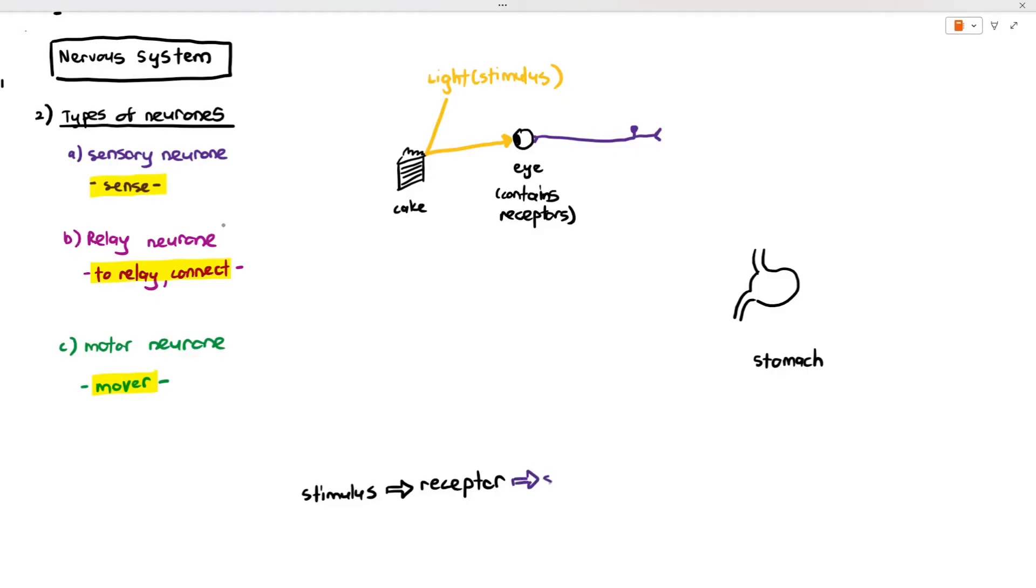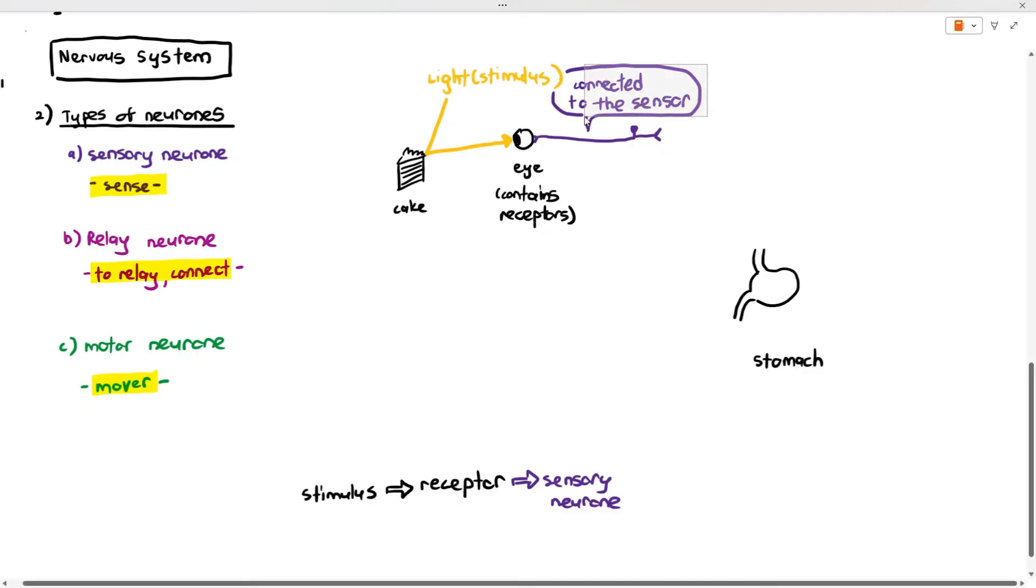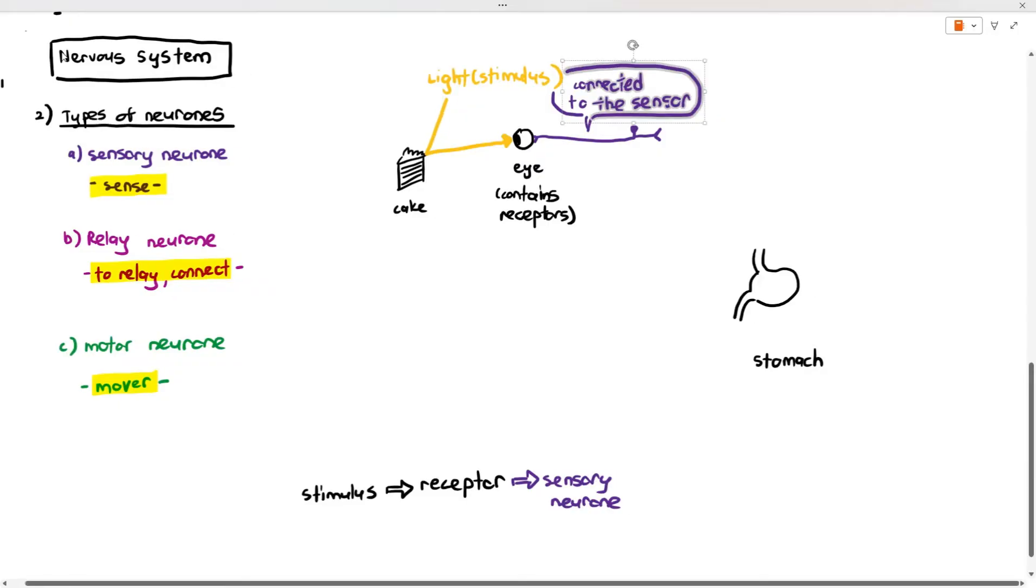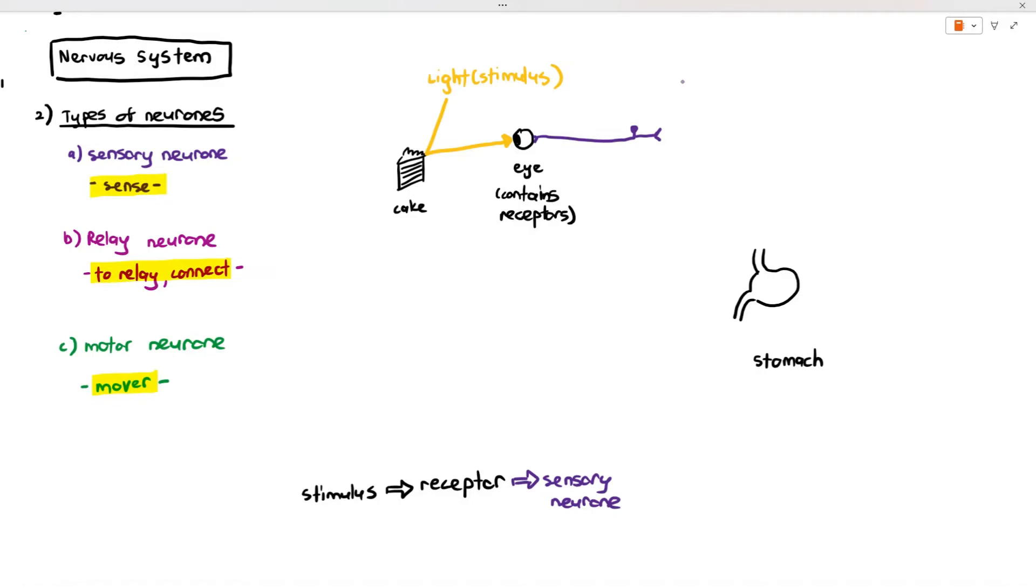If you notice at the eye, I'm drawing out a purple colored line, and that is actually a neuron, and that neuron is connected to the receptor. What neuron is that? That neuron is referred to as the sensory neuron. I've written it down as SN over there, but in the exam, you cannot write it down as SN. You have to put the full name, sensory neuron.